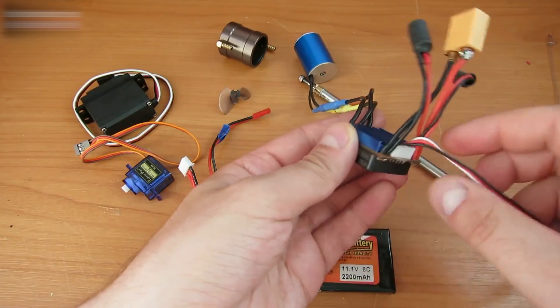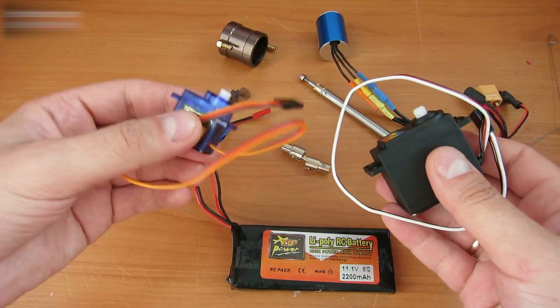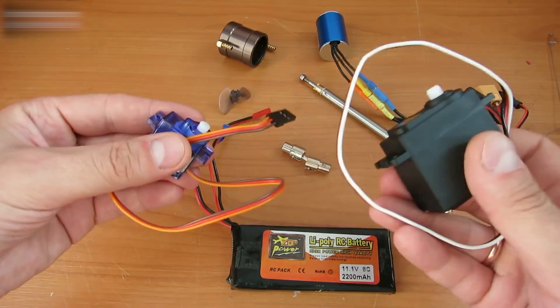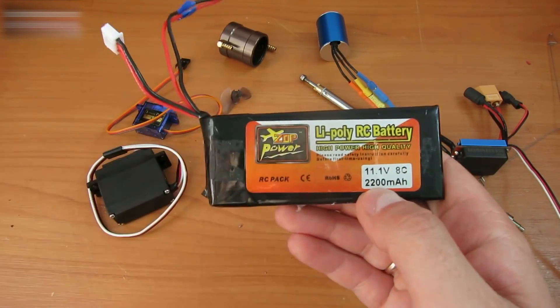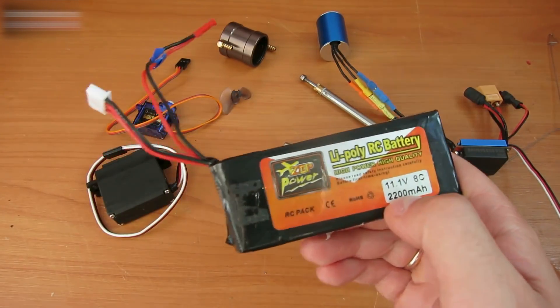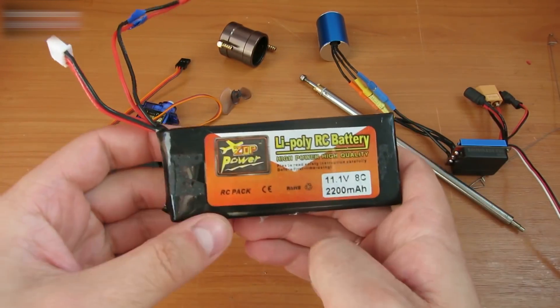The motor needs a regulator and two servos. One is for rotation and the other is for bait unloading. We need an 11.1 volt battery. I have a 2200MA one, but you can use two of the 11.1 volt batteries to increase the power.